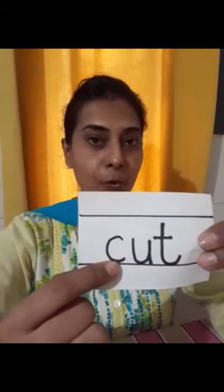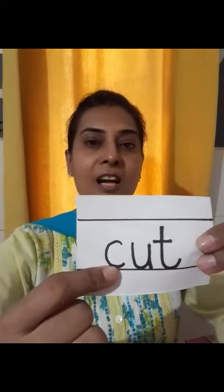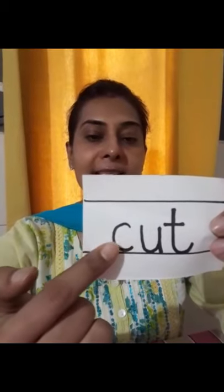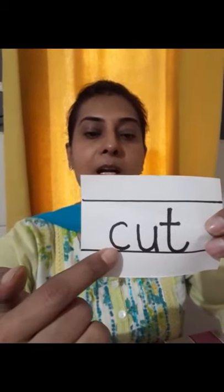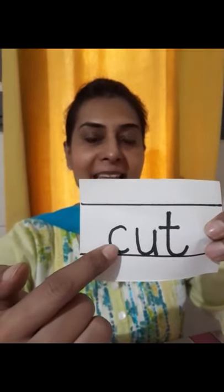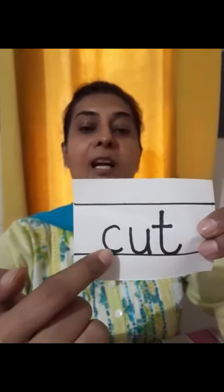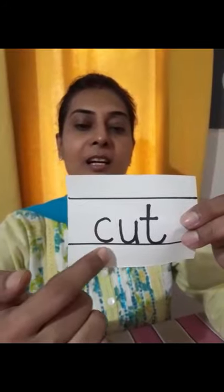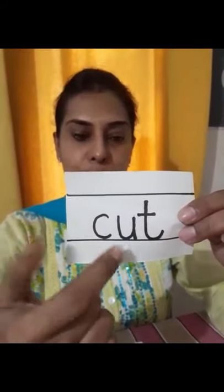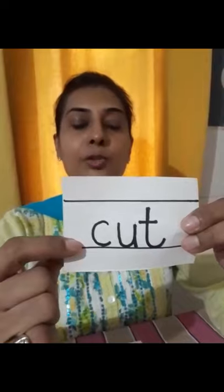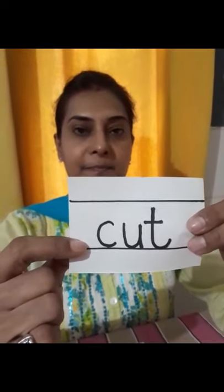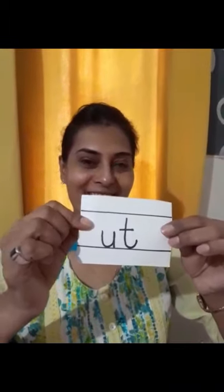C — the phonic sound of C is 'k'. When C is added to 'ut', it becomes 'cut'. K + ut, together it becomes 'cut'.